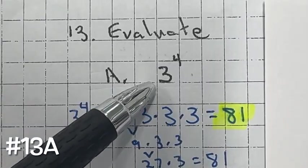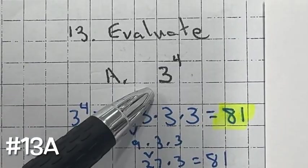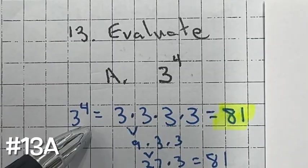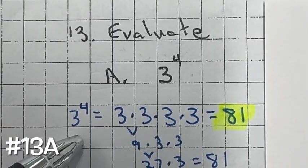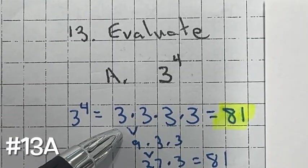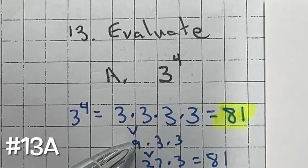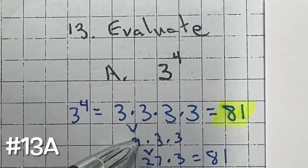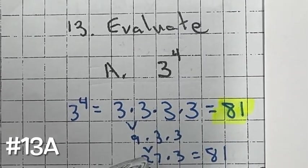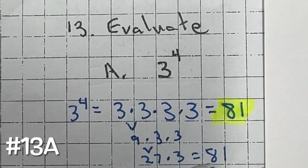For number 13, we're evaluating the expression three to the fourth power. Three represents the base and the exponent tells you how many times to multiply the base. So we have three times three which is nine, then nine times three which is 27, and 27 times three is 81.